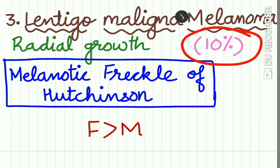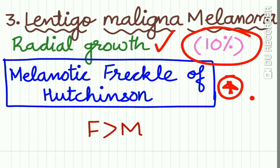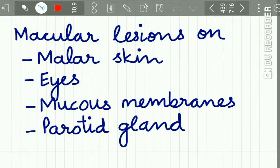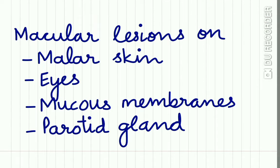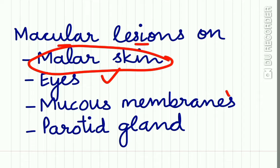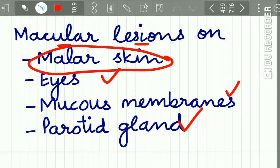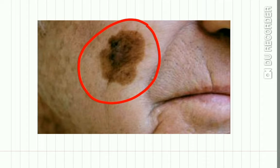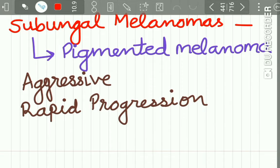Lentigo malignant melanoma accounts for 10% of lesions and has more of the radial growth phase. Its alternative name is the melanotic freckle of Hutchinson. Females are affected more than males. It appears as a macular lesion on the malar eminence, on the eyes, on mucous membranes, and sometimes the parotid gland is involved. Here you can see lentigo malignant melanoma showing the radial growth phase on the malar eminence of a female patient.